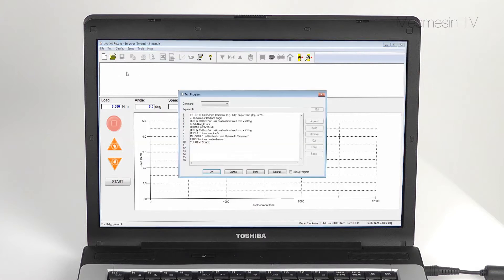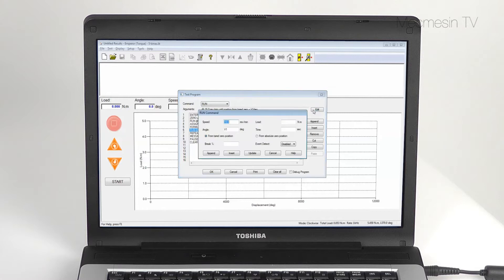Writing or modifying a test program is simple using Emperor's intuitive interface, with many options being selected from familiar Windows-style drop-down menus.